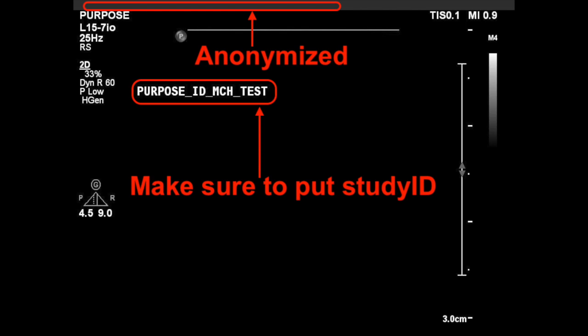Locally at the MCH, we will need to make sure that the image is anonymized. At CHOP this will happen automatically once selecting the lung preset, in order to avoid having any patient information on the actual images. The lung preset at the MCH will already include all the necessary presets for the acquisition phase.